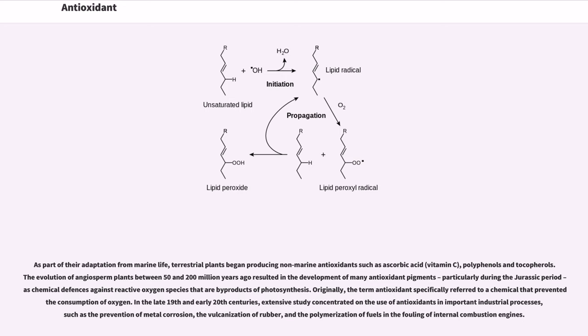Originally, the term antioxidant specifically referred to a chemical that prevented consumption of oxygen. In the late 19th and early 20th centuries, extensive study concentrated on the use of antioxidants in important industrial processes, such as the prevention of metal corrosion, the vulcanization of rubber, and the polymerization of fuels and the fouling of internal combustion engines.